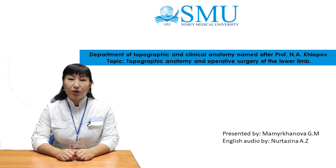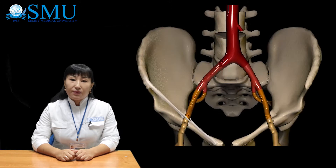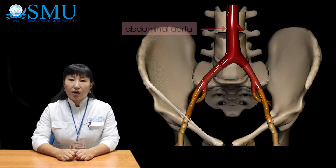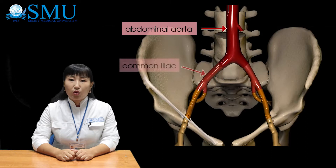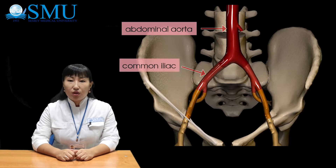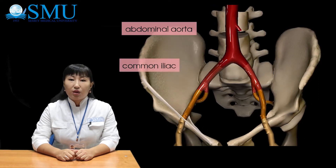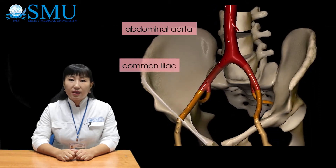Hello dear students, today's topic is topographic anatomy and operative surgery of the lower limb. At the level of the fourth lumbar vertebra, the abdominal aorta is divided into two common iliac arteries: left common iliac artery and right common iliac artery. At the level of the sacroiliac joint, the common iliac artery is divided into two: the external iliac artery and internal iliac artery.